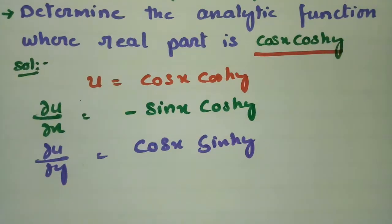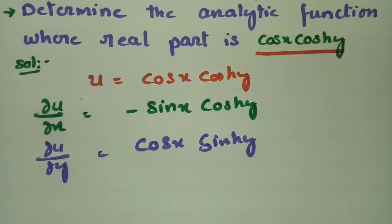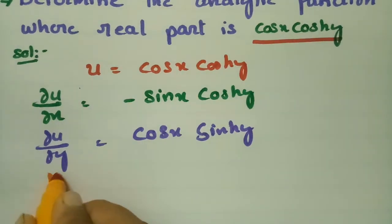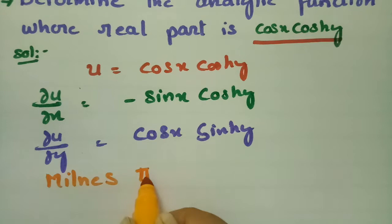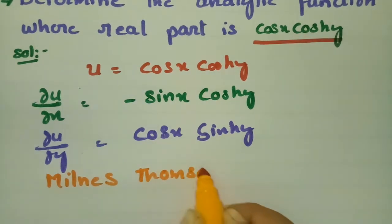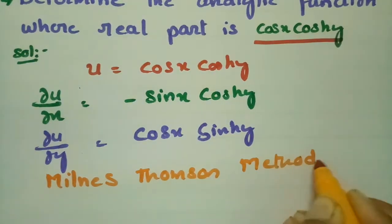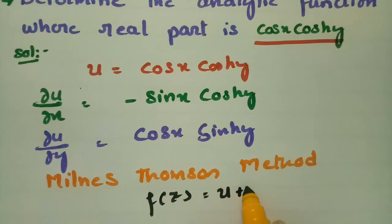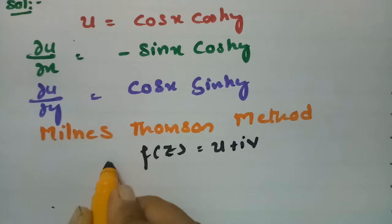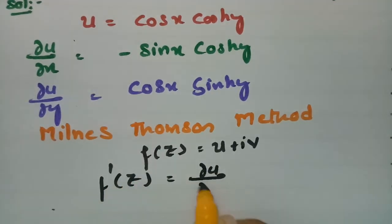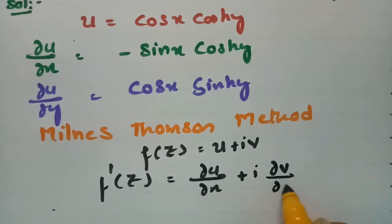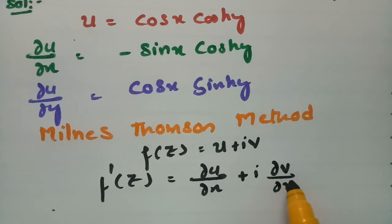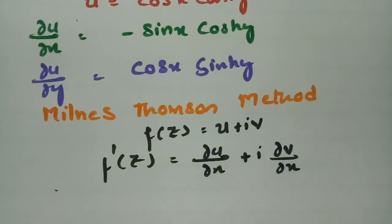We have to find the analytic function, and I am going to use the Milne-Thompson method, which makes this very easy to solve. According to the Milne-Thompson method, f(z) = u + iv. If I differentiate with respect to x, then f'(z) = ∂u/∂x + i·∂v/∂x. Now, the real part is given, so I have to transform the imaginary part into the real part using the Cauchy-Riemann equations.